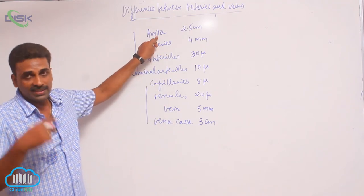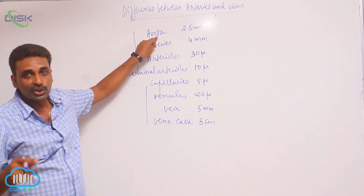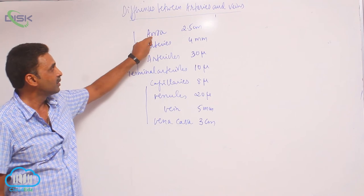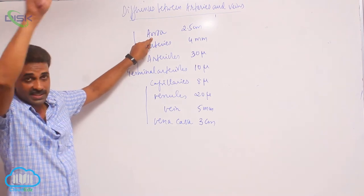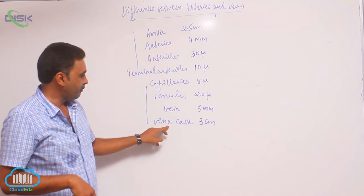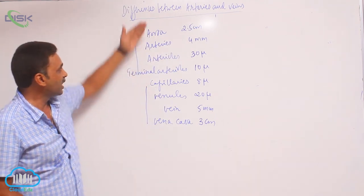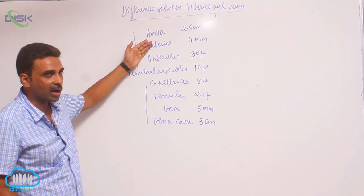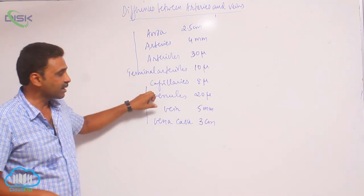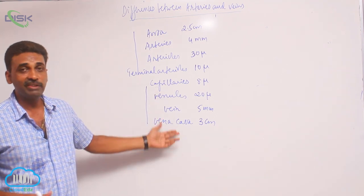The aorta is the dorsal continuation of the systemic arch or aortic arch. It comes directly from the systemic arch — there it is around 2.5 centimeters in diameter, and the vena cava is around 3 centimeters in diameter. Gradually the aorta breaks down into arteries, arterioles, and capillaries, and in the venous system the capillaries combine together to form venules, veins, and come back to the heart in the form of vena cava.